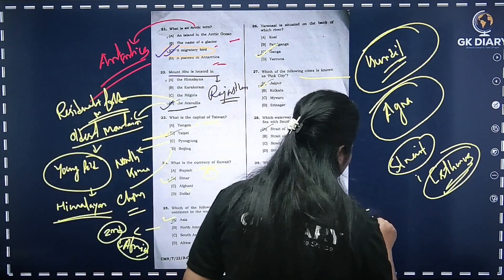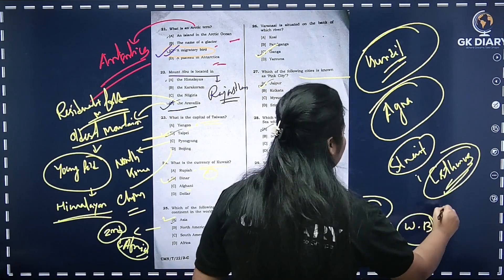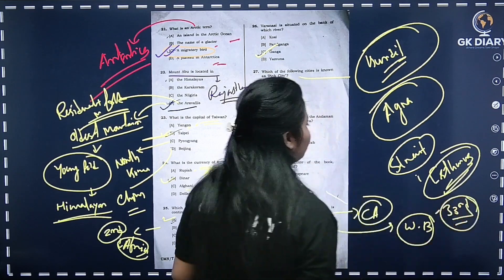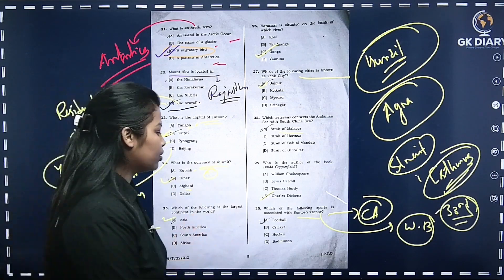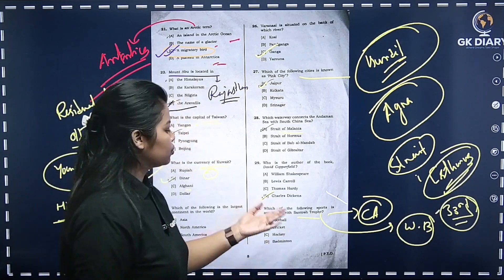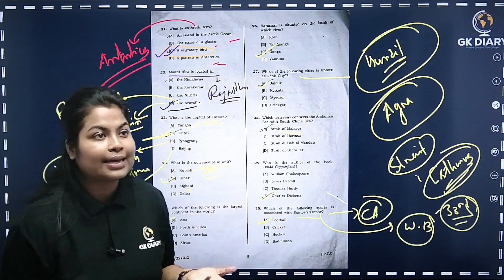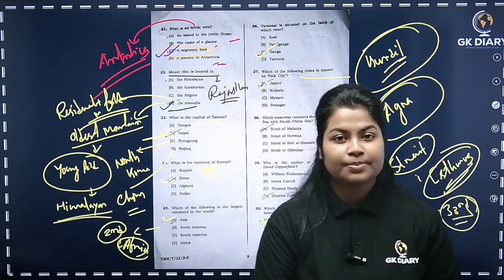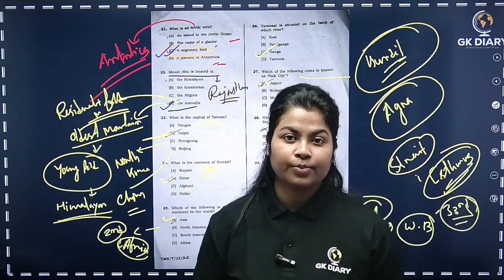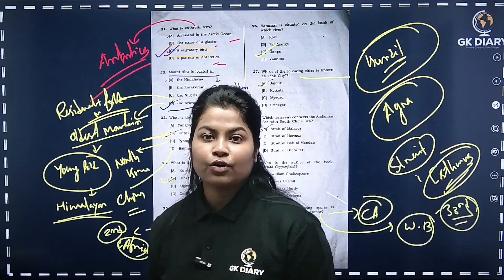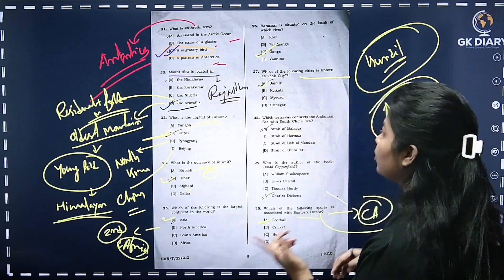Next: which of the following sports is associated with the Santosh Trophy? The Santosh Trophy is related to West Bengal. This is about football. There are many clubs involved. The correct answer is football. You can discuss hockey trophies in the next session.